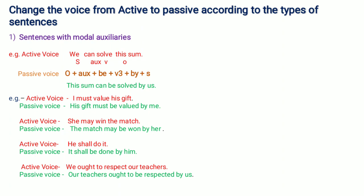Next example: 'I must value his gift.' In this sentence, 'must' is the modal auxiliary verb. 'I' is the subject, 'value' is the main verb, and 'his gift' is the object. We take 'his gift' to the beginning of the passive sentence and use the same modal auxiliary verb 'must', then add 'be'. The passive voice is: 'His gift must be valued by me.'